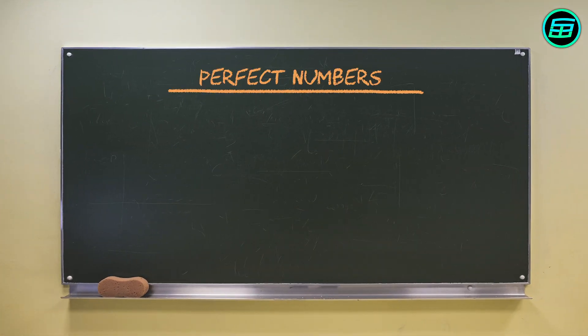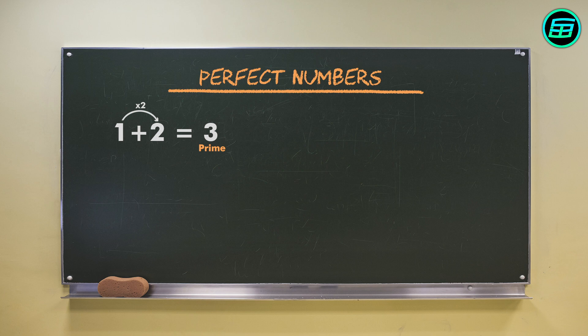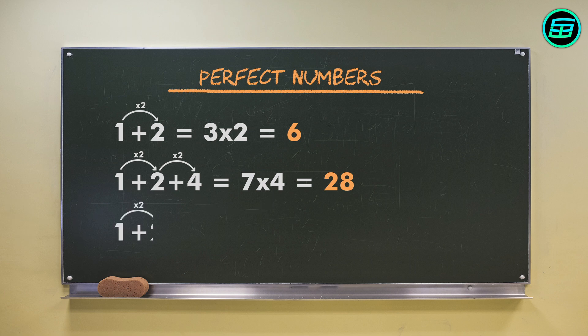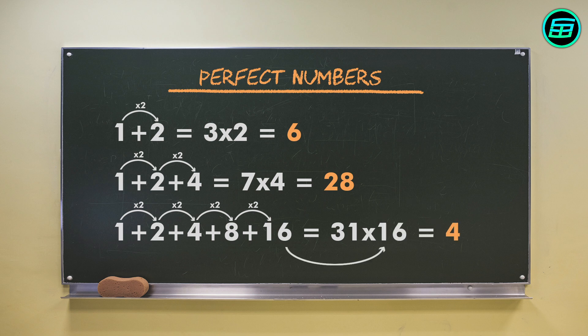For example, 1 plus 2 equals 3, and 3 is a prime number. Therefore, 3, the sum, times 2, the last number, equals 6, and 6 is a perfect number. 1 plus 2 plus 4 equals 7, and 7 is a prime number. Therefore, 7 times 4, which is 28, is a perfect number. 1 plus 2 plus 4 plus 8 plus 16 equals 31, and 31 is a prime number. Therefore, 31 times 16, which is 496, is also a perfect number.